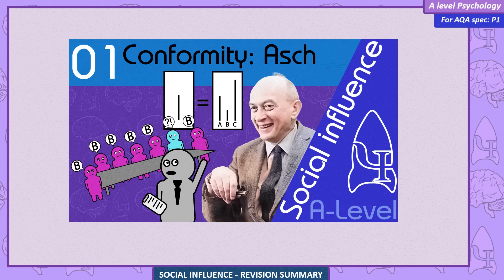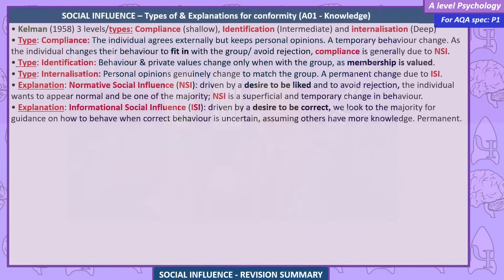Conformity — Kelman, 1958. Three levels and types. Compliance is shallow: the individual agrees externally but keeps personal opinions — a temporary behaviour change. As the individual changes their behaviour to fit in with the group and avoid rejection, compliance is generally due to NSI. Identification is intermediate: behaviour and private values change only when with the group, as membership is valued. Internalization is deep: personal opinions genuinely change to match the group.